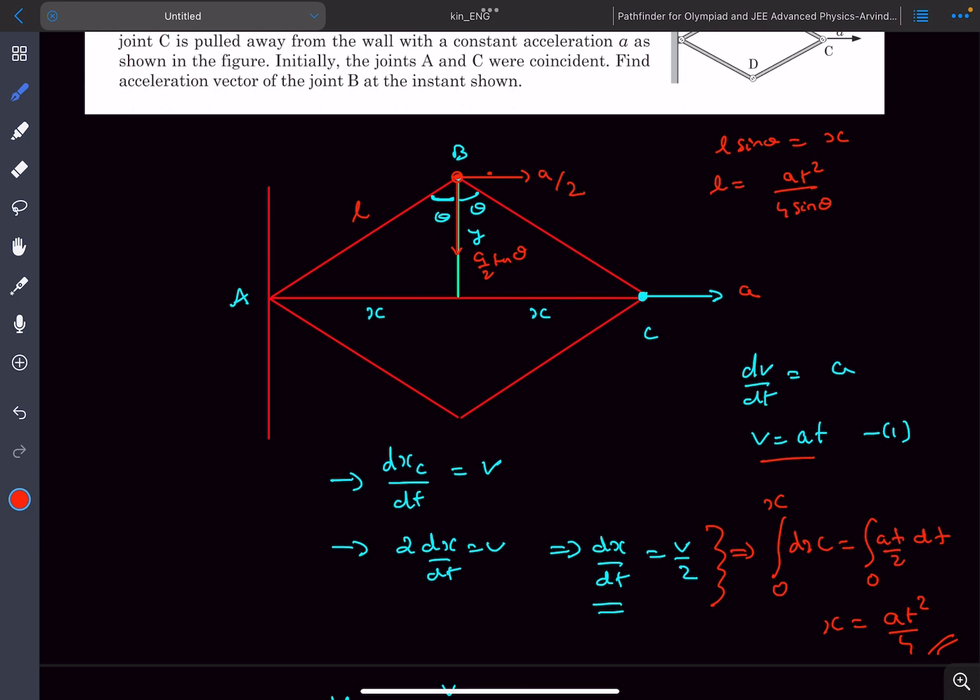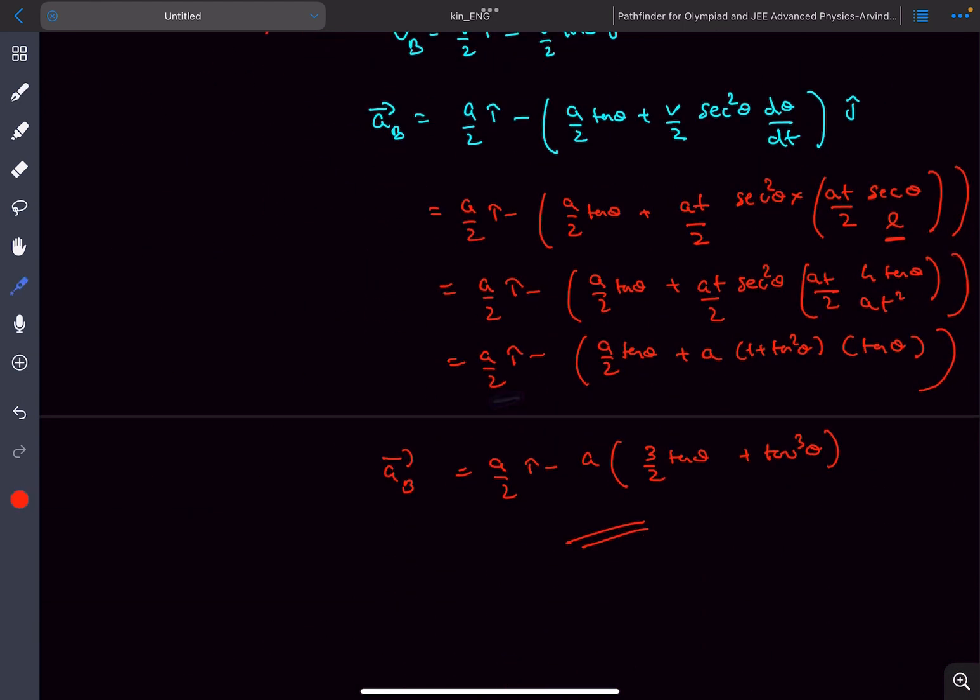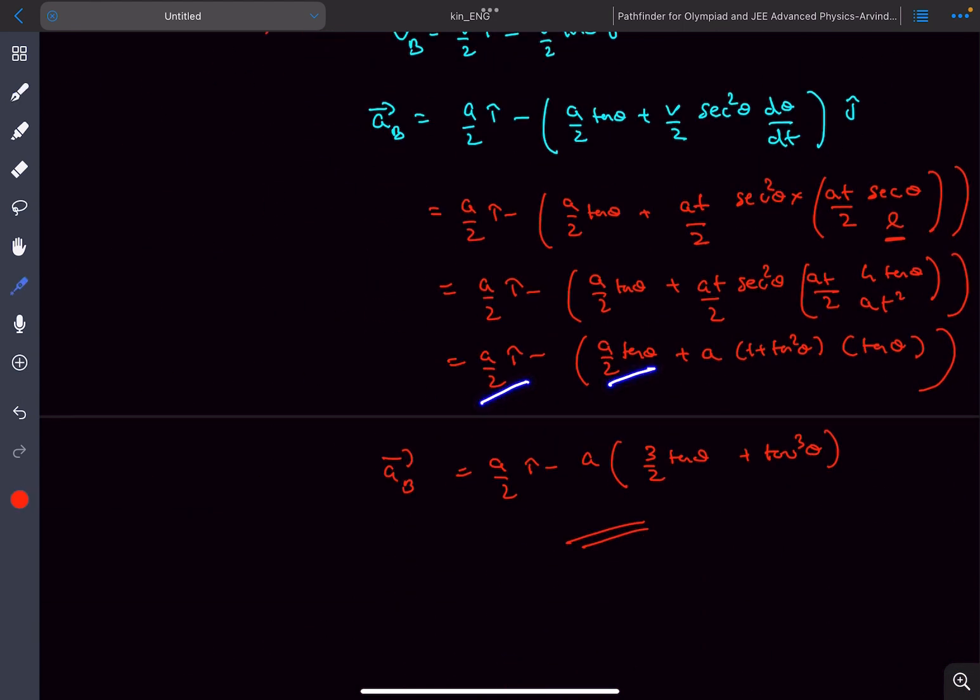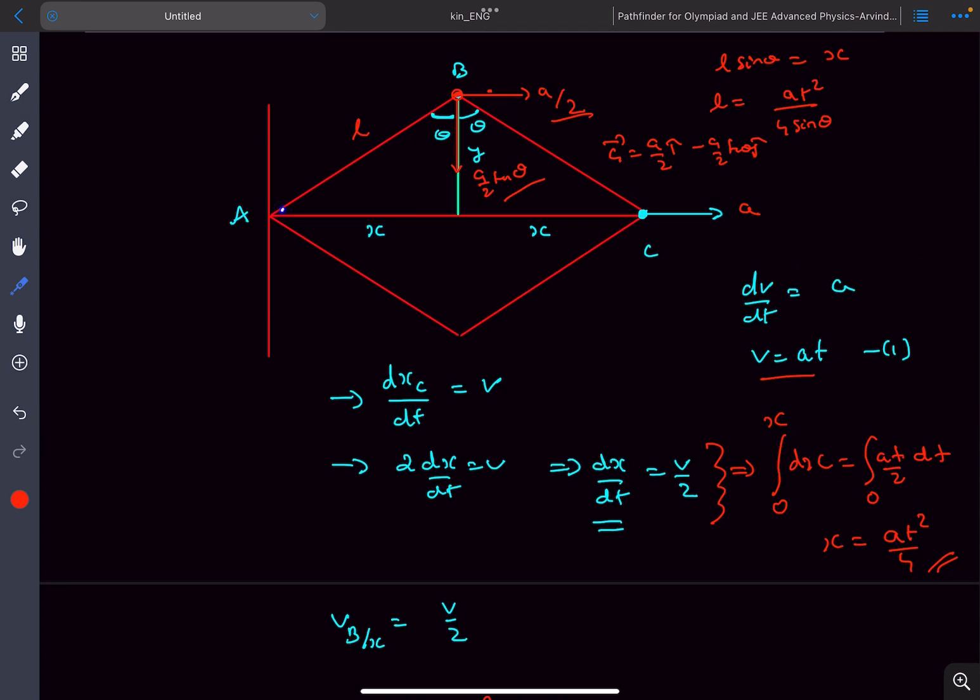Now as you can see this is not the answer. In this case the acceleration will come out to be A by 2 i cap minus A by 2 tan theta j cap, so you got this term and this term but you're missing out on this term. That is the term because of the rotation of this rod.